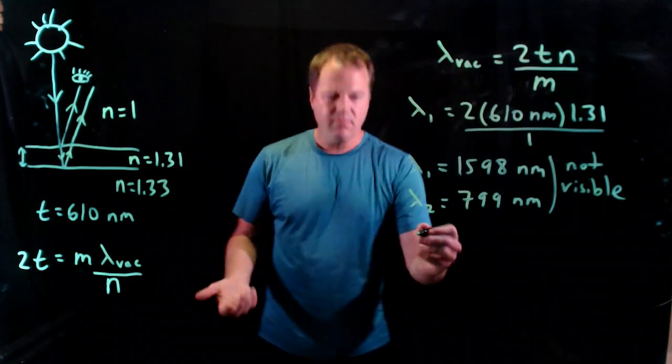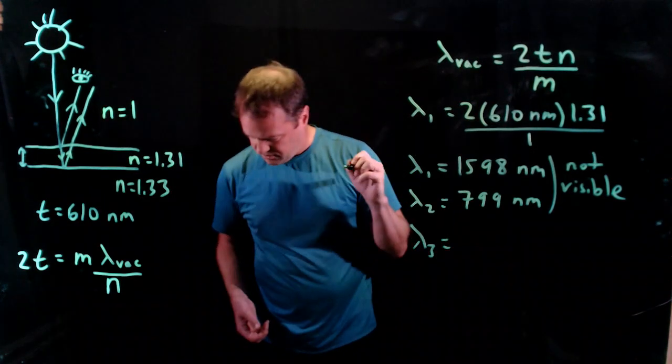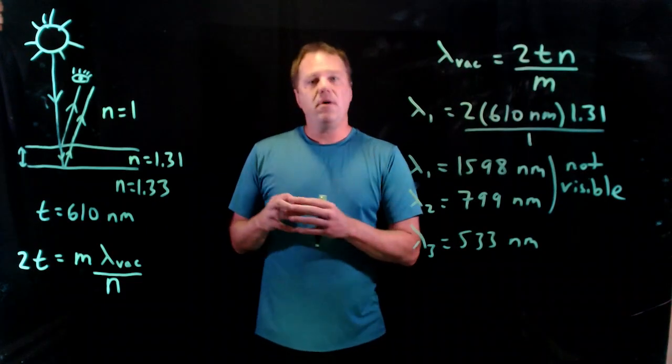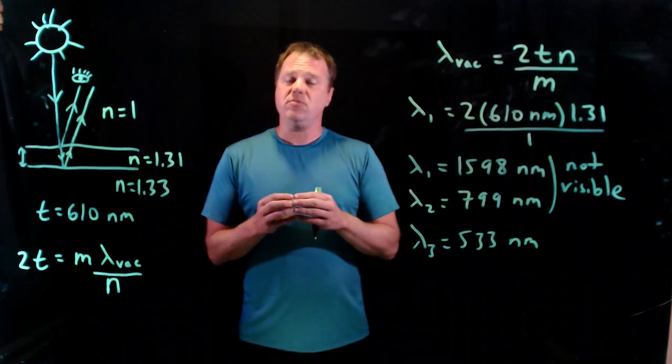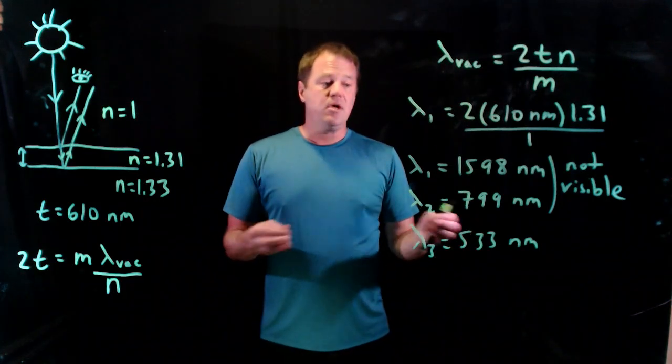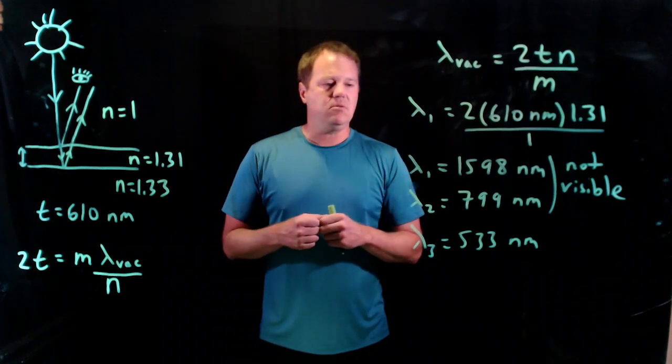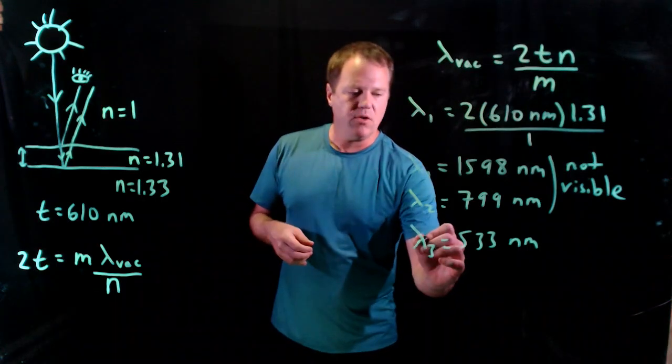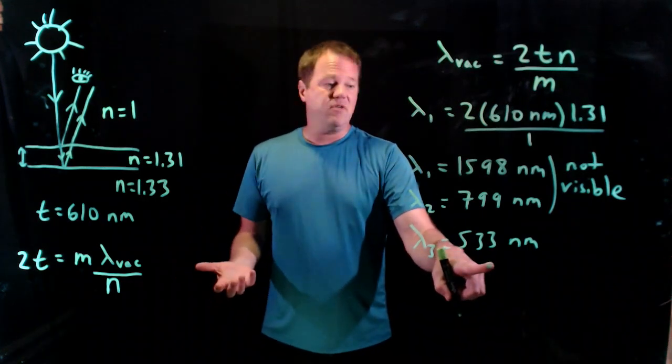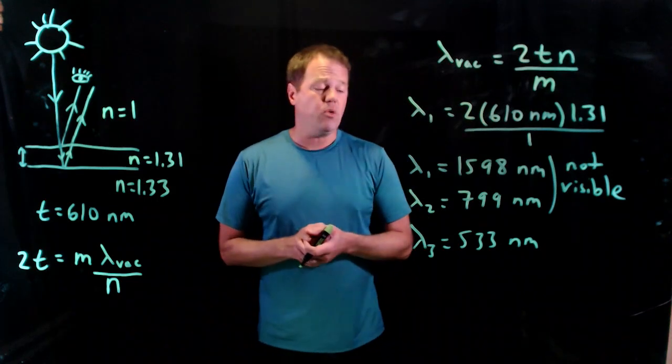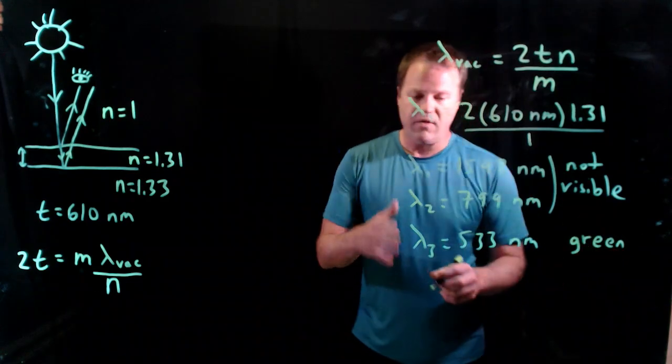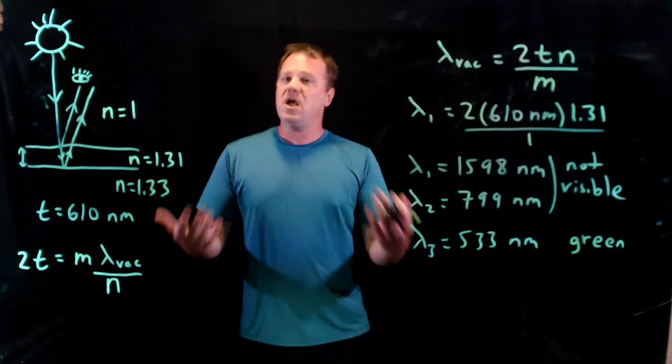Okay, well let's try 3. If I throw in 3 I get 533 nanometers. Okay, so now that is between the rough boundaries or rough limits of human vision, 400 to 700 nanometers. So this is in the visible spectrum and in fact we can name the color. If we look up the wavelengths this is actually green. Okay, so we can even specify the color of this wavelength that's constructively interfering. Okay, let's keep going.